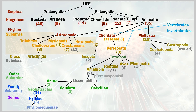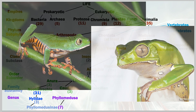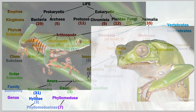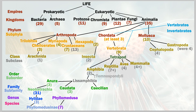Next we go to the genus level. Phyllomedusinae breaks down into seven genera, and the frog I want to pin down belongs to one of them: phyllomedusa. The phyllomedusa genus contains many frogs that now clearly look even more similar to each other. Phyllomedusa itself has 30 different species.